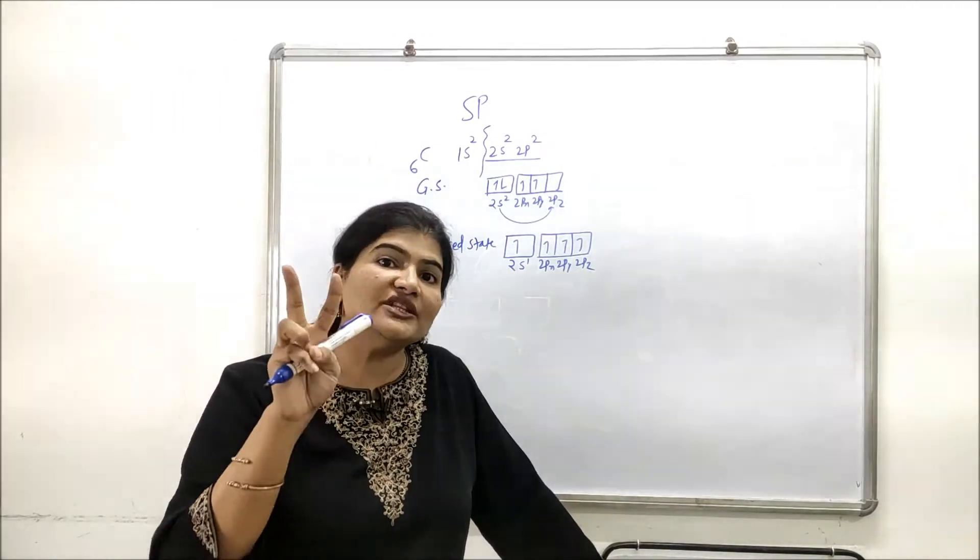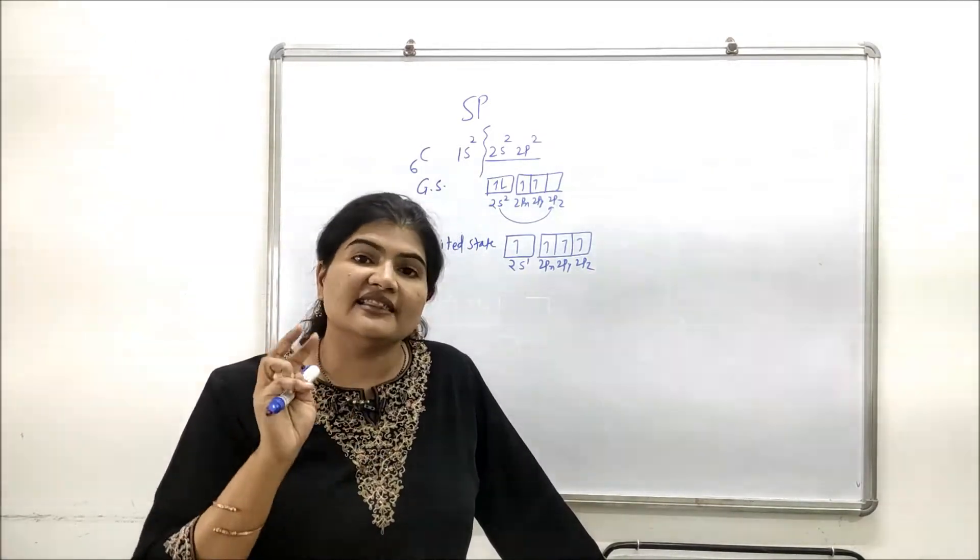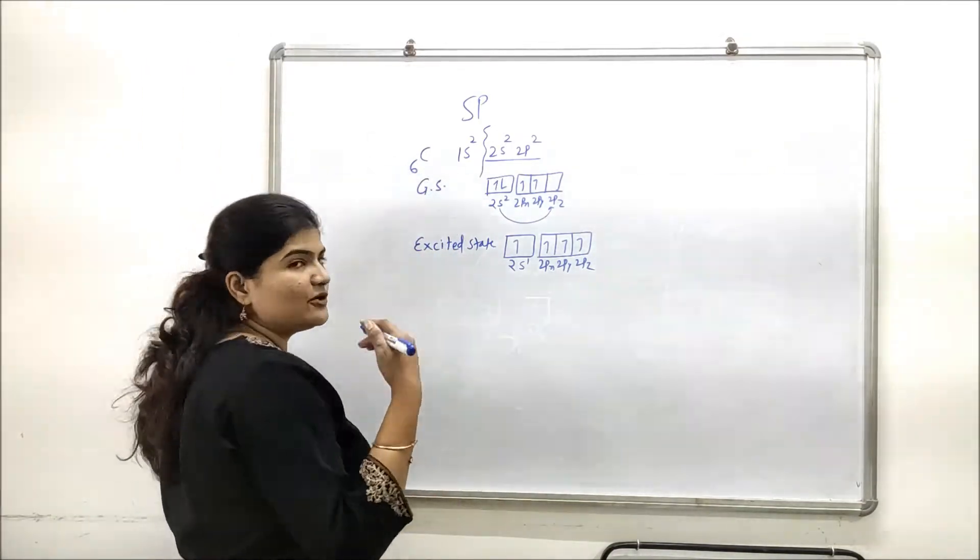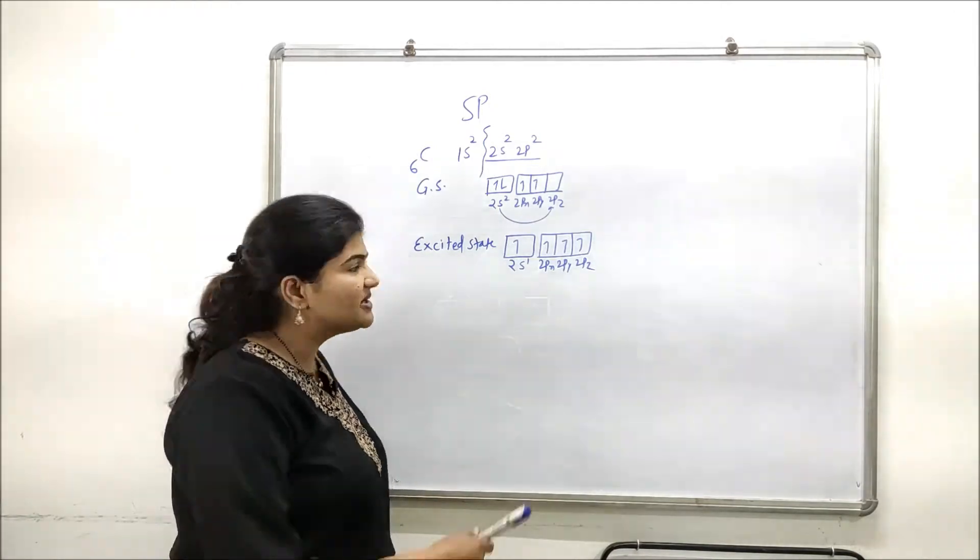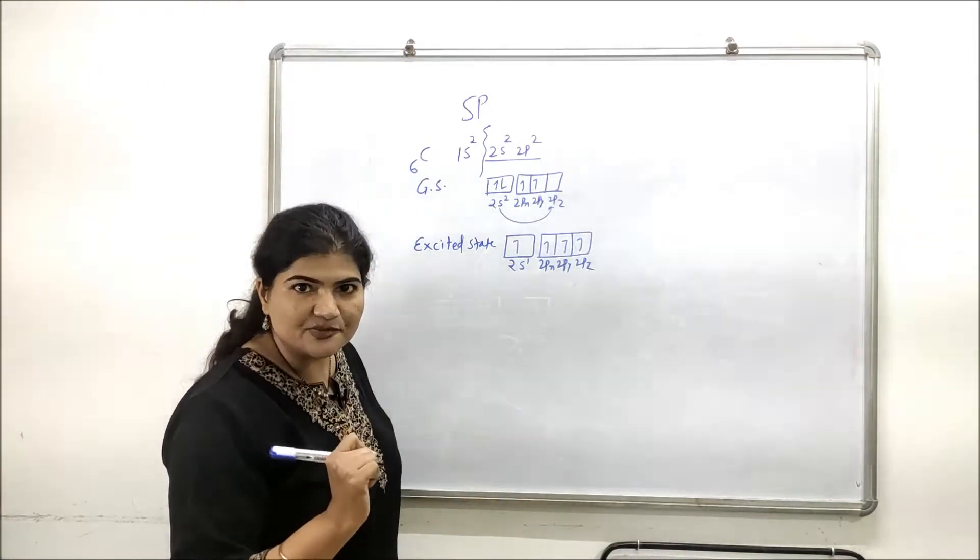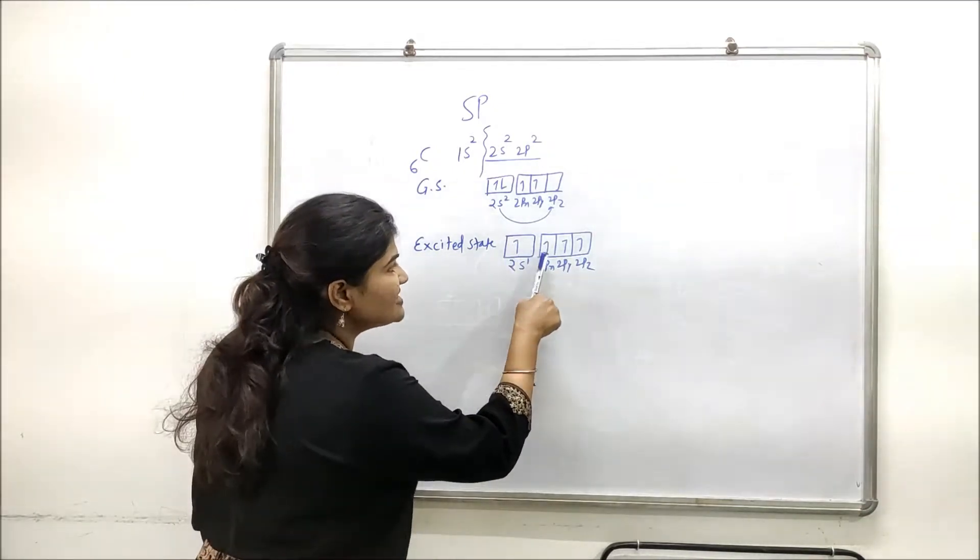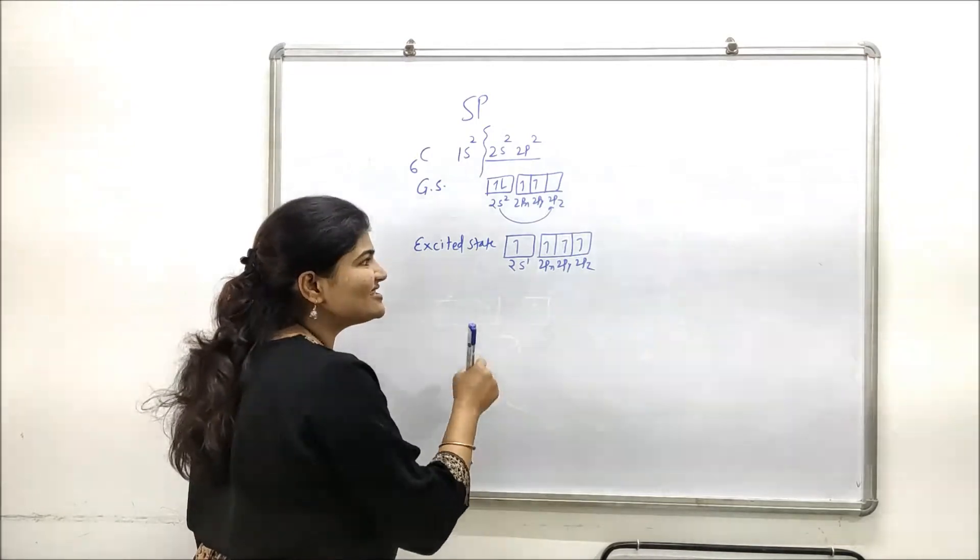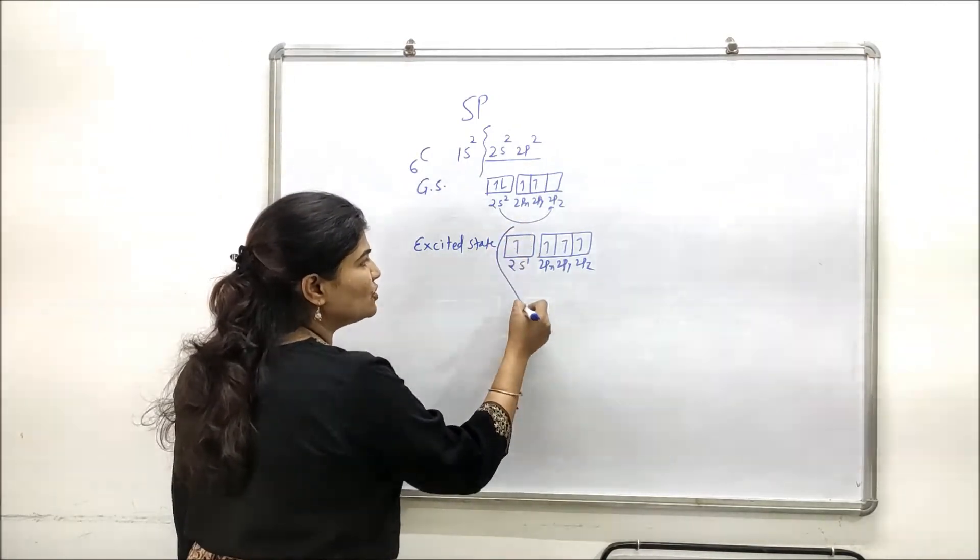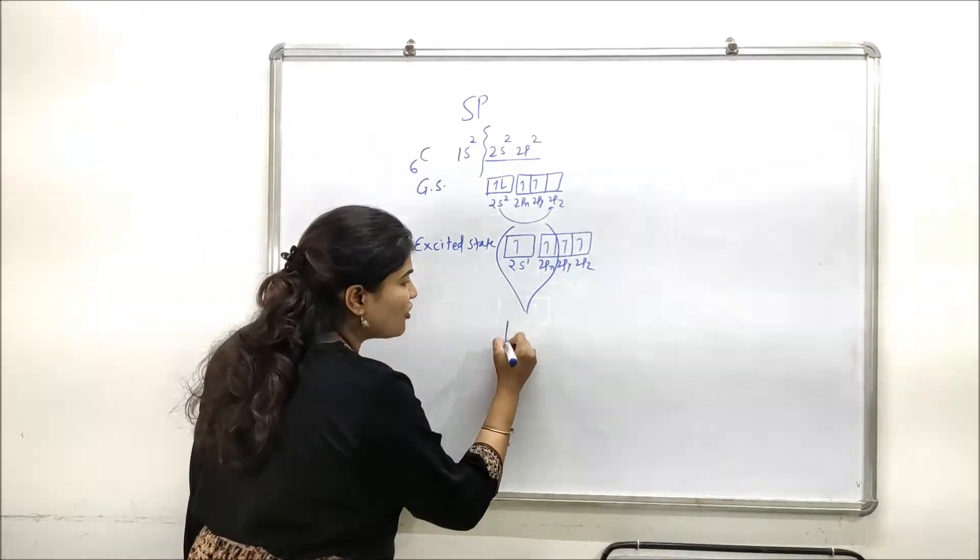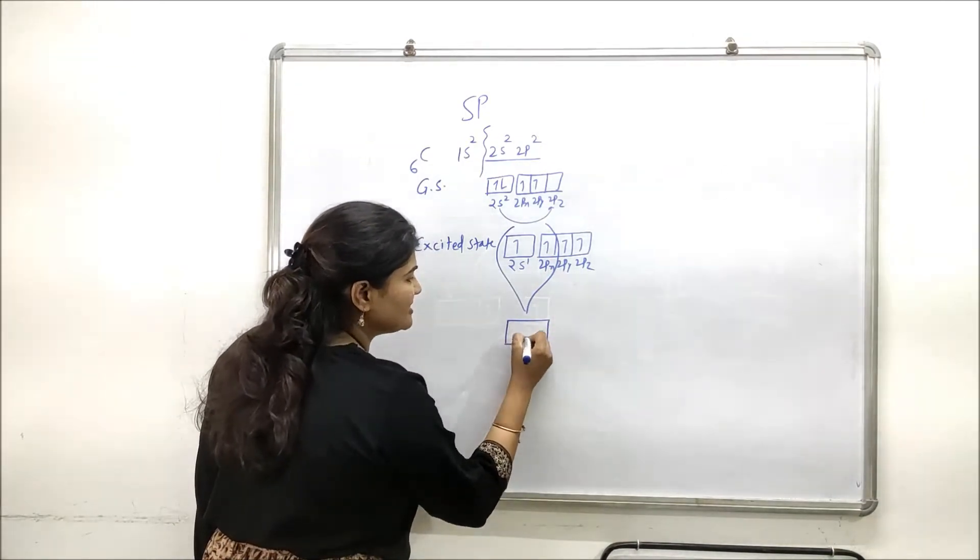What it does during hybridization, instead of mixing one s and three p like it does in sp3, or one s and two p as it does in sp2, it actually just mixes one 2s and one 2p orbital together to form two hybrid orbitals, which are called sp hybrid orbitals.